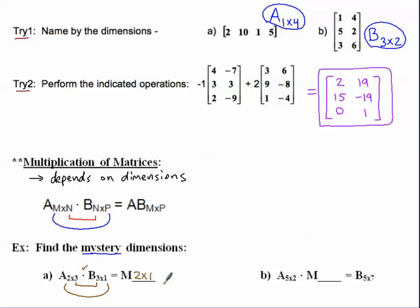In the second example, the mystery matrix is in the middle. If I can do this matrix multiplication, then since there's a 2 here, this middle number also has to be a 2 — so it's a 2 by something. Since the outer numbers give the answer, and I know my answer is 5 by 7, and here's a 5, this must be a 7. So the mystery matrix is a 2 by 7. It's a little game where you piece things together.